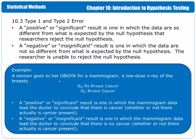For example, a woman goes to her OBGYN for a mammogram, a low-dose x-ray of the breasts. The null hypothesis, which is the underlying assumption going into any type of a clinical test, is that the results are benign or that no breast cancer exists. The alternative, which is what the test is trying to bring out, is that the breast cancer does exist, or that there is a significant or a positive result.